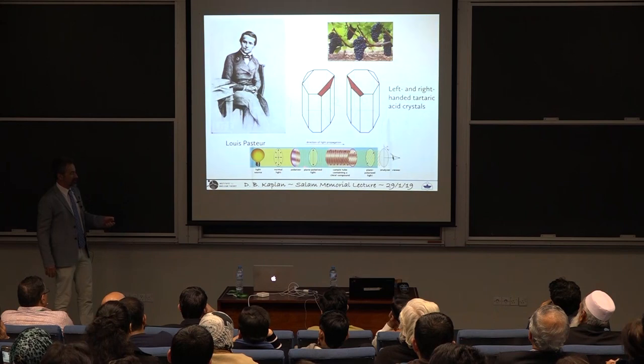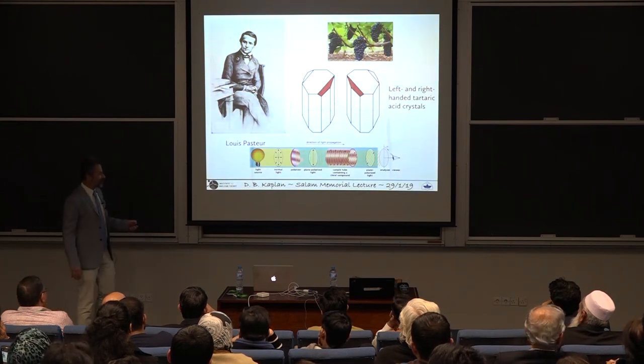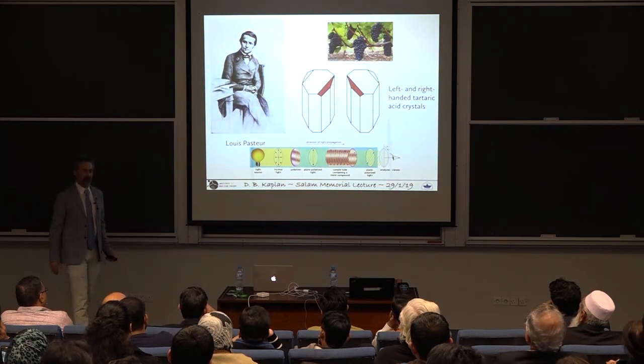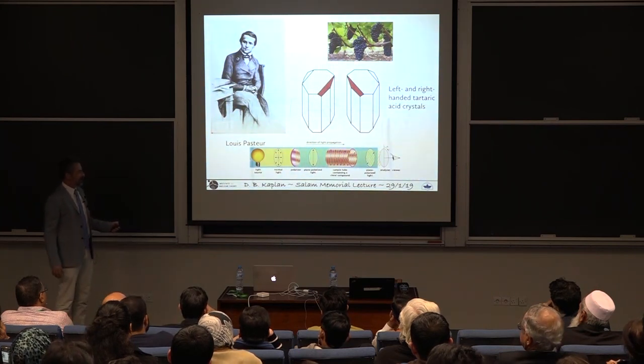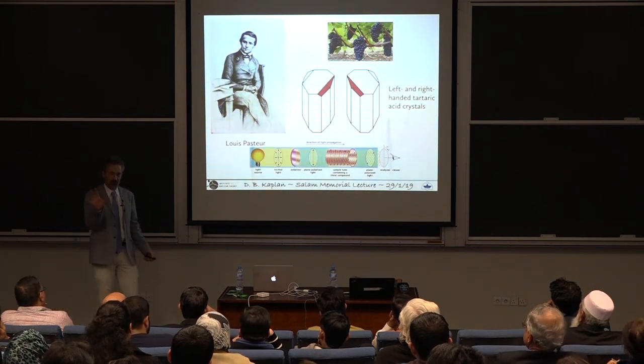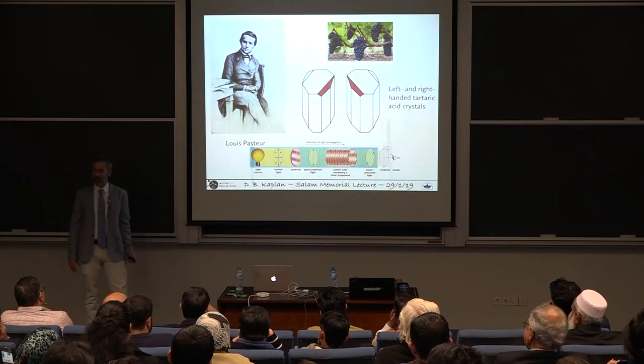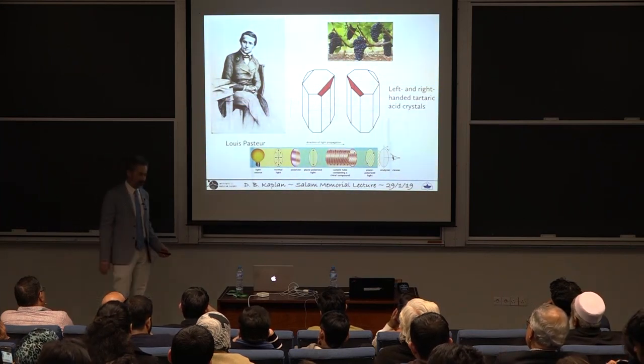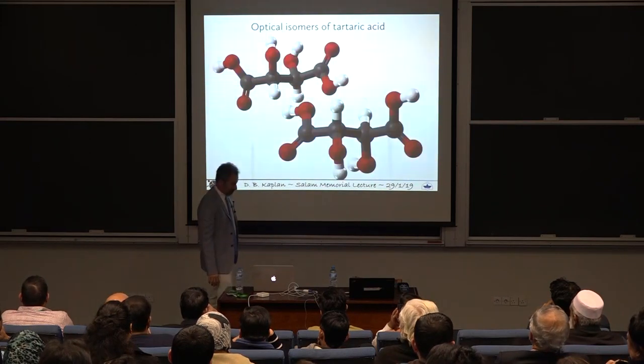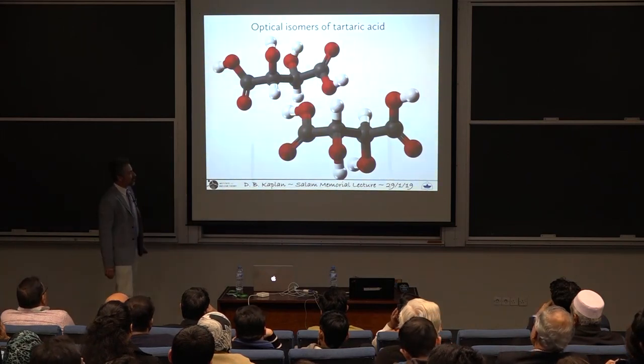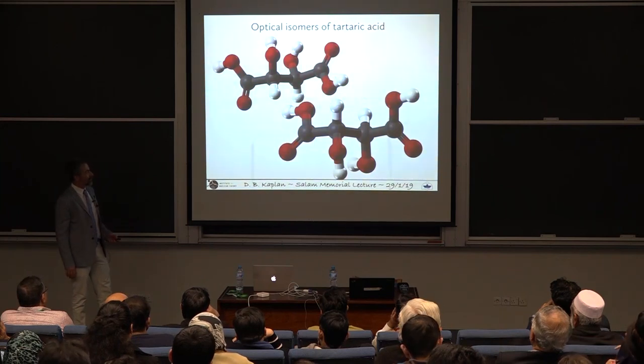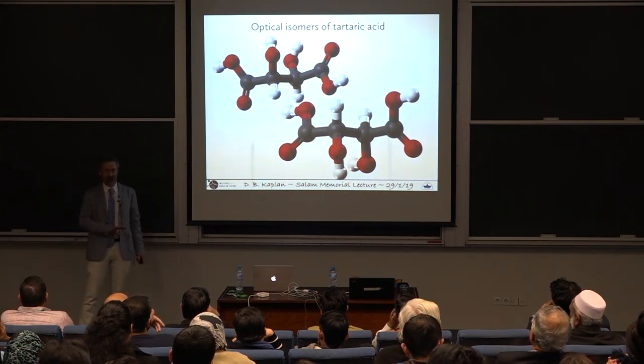Because he was a great scientist, he tried something. He said, let's see what happens if I take a light source here and I put it through a polarizing filter like your sunglasses and pass it through this liquid with one type of crystal or the other in it. Then take another polarizing filter from the other side and rotate it and see where the maximum amount of light coming through is. He found that these crystals rotated the light in different directions. The right-handed crystals rotated it one way, the left-handed crystals rotated it the other.